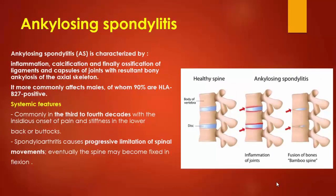Ankylosing spondylitis. The main characteristic feature is inflammation followed by calcification and finally ossification of ligaments and capsules of the joint with resultant bony ankylosis. It is more common in males and 90% of cases are HLA-B27 positive. Systemic features commonly occur in the third to fourth decade with insidious onset. The spine becomes fixed in flexion, a condition called bamboo spine.